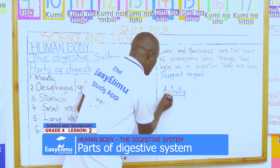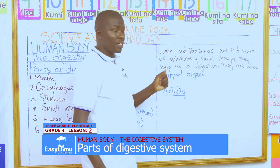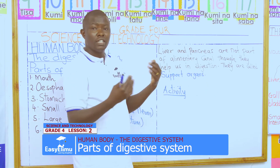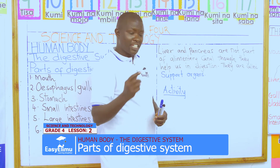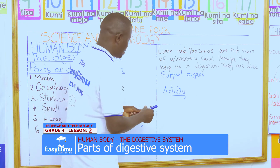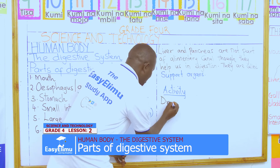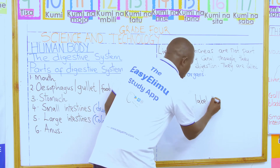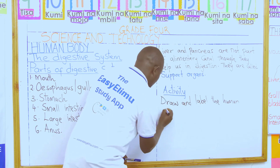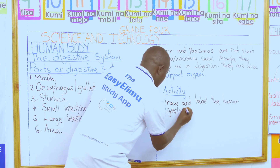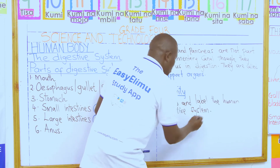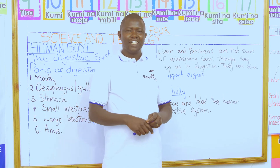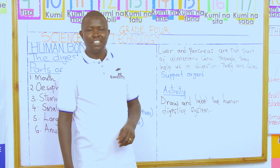Remember, liver and pancreas are not part of the alimentary canal even though they help us in digestion — we call them the support organs. The activity for us today is to draw and label the human digestive system. Any questions? That marks the end of our lesson for today. Bye bye.